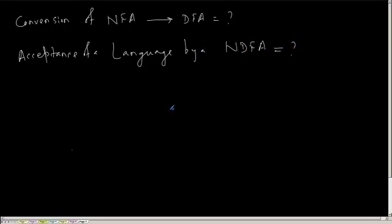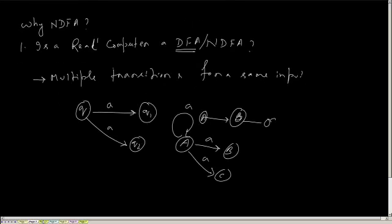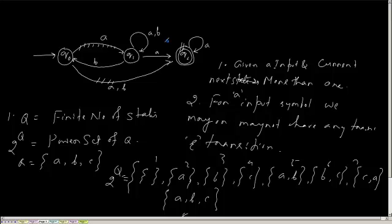My transition function is a mapping of Q and alpha to 2 to the power Q. Now 2 to the power Q - suppose I have a transition like Q0, Q1, let us take the same example here. What will be my final set of states for this diagram?